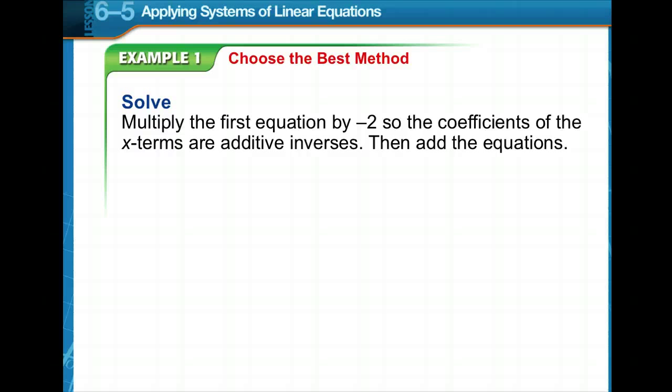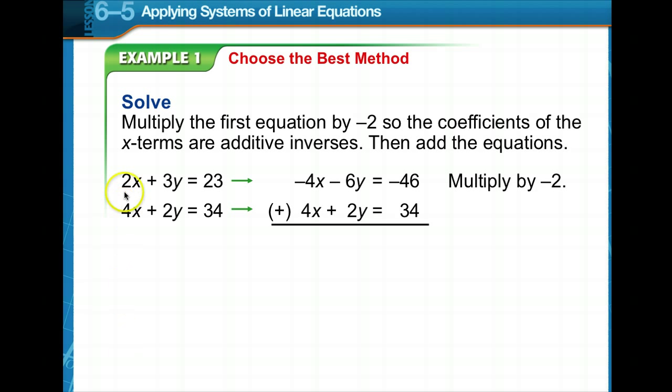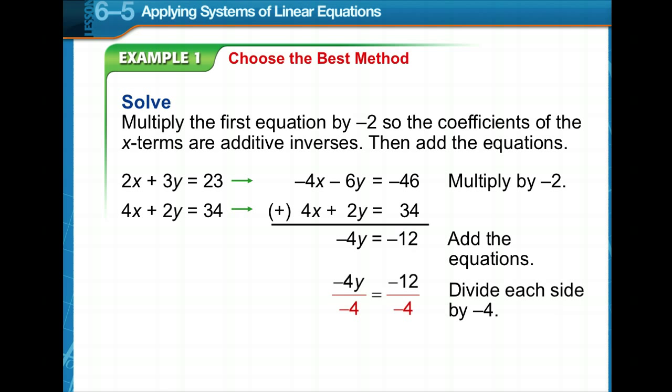So we're going to multiply the first equation by negative 2, so the coefficients of the x terms are going to be additive inverses. So we can just multiply one equation by negative 2. Negative 2 times 2x is negative 4x. Negative 2 times 3y, negative 6y. Negative 2 times 23, negative 46. Now we add them together, and notice our x is going to eliminate. Negative 6y plus 2y is negative 4y. Negative 46 plus 34 is negative 12. Divide both sides by negative 4. We end up with y is equal to 3.